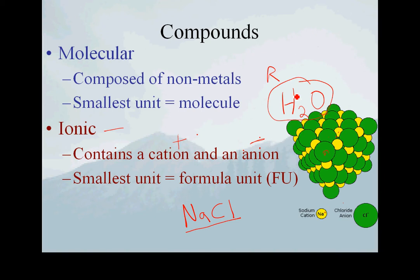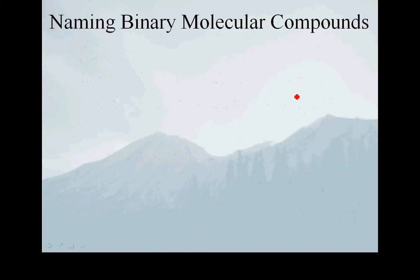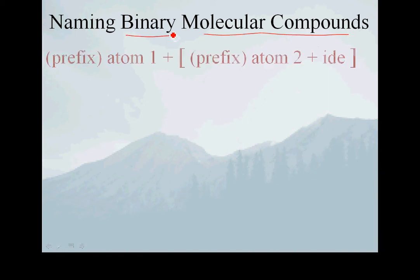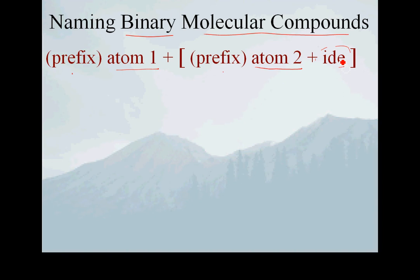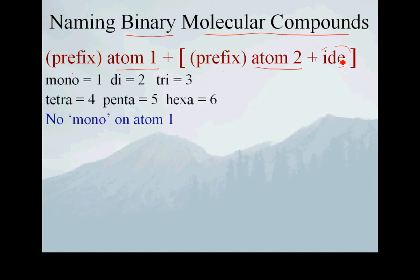Naming compounds is a function of which group it falls under — molecular or ionic. The first group we'll talk about is binary molecular compounds. Molecular compounds contain two non-metals, and binary means two different elements. The generic formula for naming binary molecular compounds is a two-word phrase. It helps a lot if we look at examples.